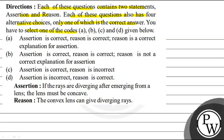You have to select one of the codes A, B, C and D given below. Code A is: assertion is correct, reason is correct, and reason is a correct explanation for assertion. Option B is: assertion is correct, reason is correct, and reason is not a correct explanation for assertion. Option C is: assertion is correct, reason is incorrect. And option D is: assertion is incorrect, reason is correct.